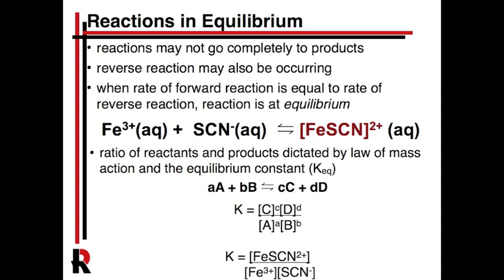It's not necessarily a one-to-one ratio — sometimes it is — but that is dictated by what we call the law of mass action, which is the equation shown here, where you take the concentration of the products over the concentration of the reactants raised to whatever stoichiometric number they have. For our reaction, the equilibrium constant expression has the concentration of iron thiocyanate in the numerator and the concentrations of iron and thiocyanate in the denominator.